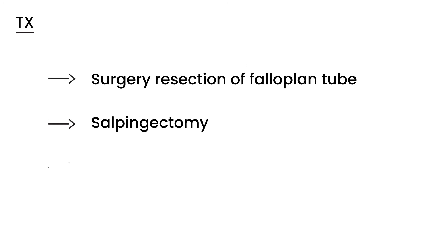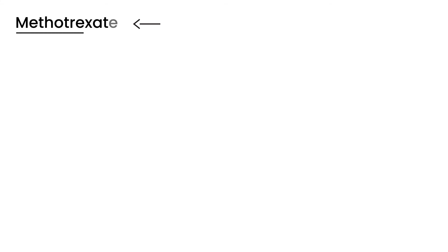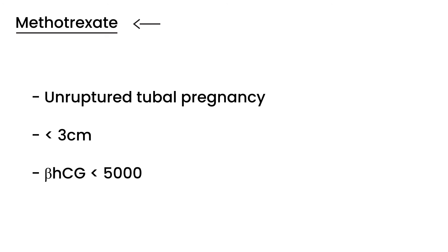The second option is the medication methotrexate. However, methotrexate is only used in certain specific conditions. It can only be used when you have an unruptured tubal pregnancy that is less than three centimeters in size, and the beta-hCG value must be less than 5,000. If those criteria are met, then methotrexate can be used.